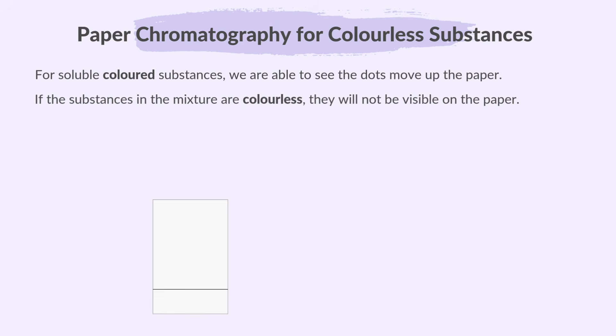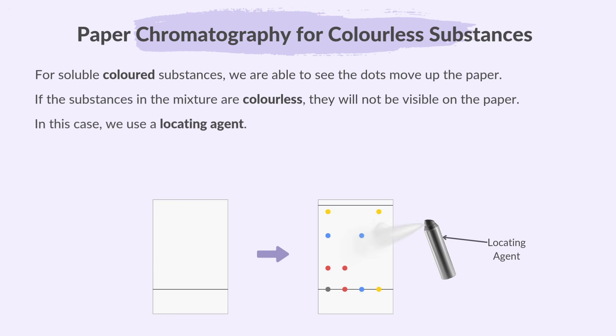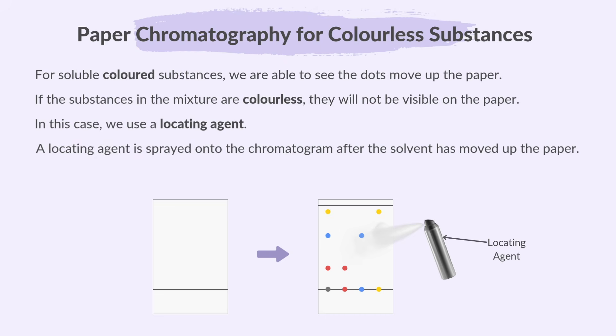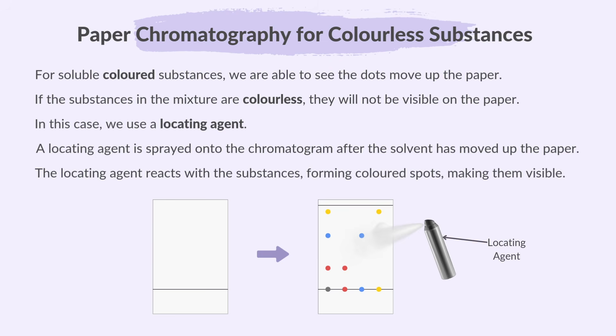We just learned how paper chromatography is used to separate mixtures of soluble coloured substances. But how do we separate mixtures of soluble colourless substances? If the substances are colourless, they will not be visible on the paper. In this case, we use something called a locating agent. A locating agent is sprayed onto the chromatogram after the solvent has moved up the paper. It reacts with the substances, forming coloured spots and making them visible.